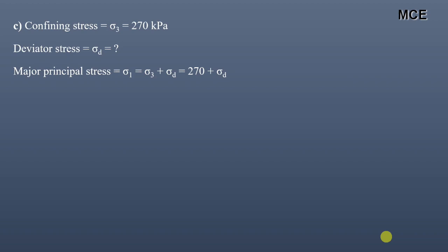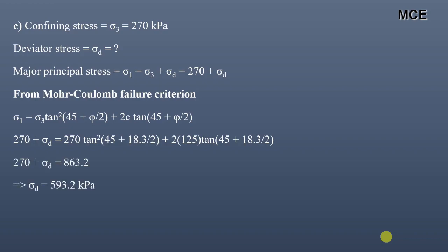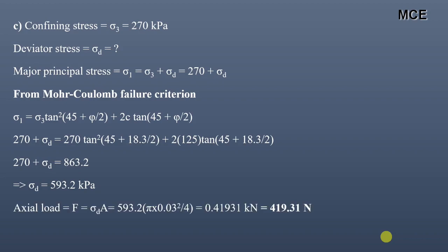The major principal stress sigma 1 equals sigma 3 plus sigma d, which equals 270 plus sigma d. From the Mohr-Coulomb failure criterion, sigma 1 = sigma 3 × tan²(45 + φ/2) + 2c × tan(45 + φ/2). Putting in the values of sigma 3, phi, and c and solving for sigma d, we get sigma d equal to 593.2 kilopascal.